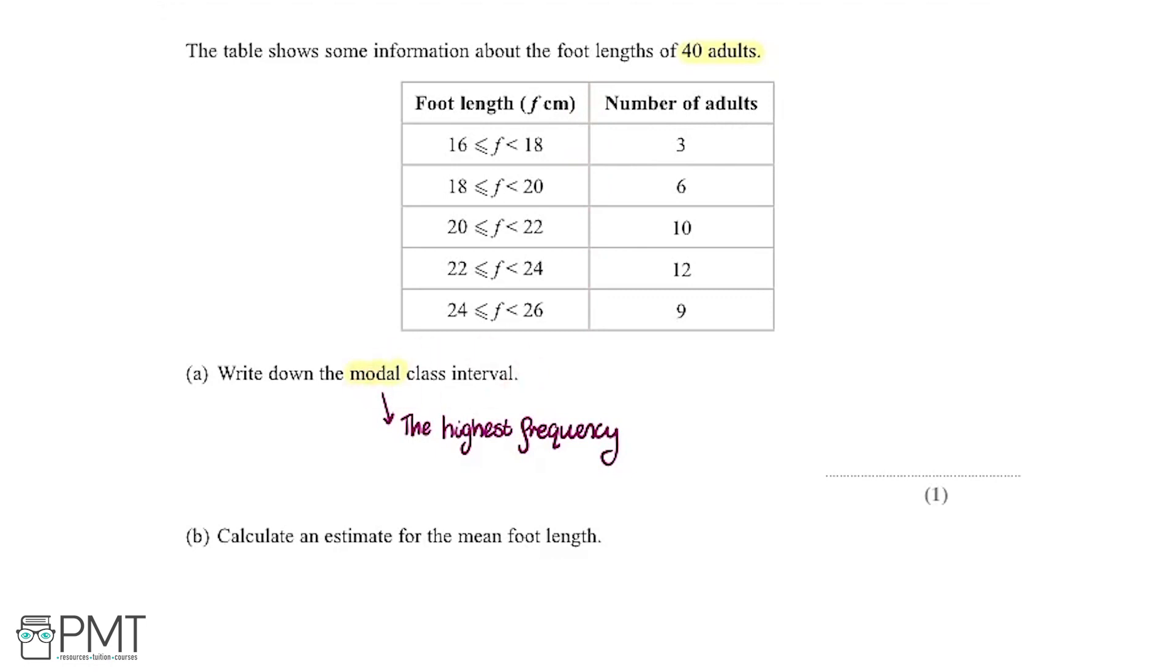Our modal class interval is going to be this one here, so the foot length being greater than or equal to 22 and less than 24. That's because it's got the highest frequency - we've got 12 here which we can see is the highest out of all of these. We need to write down the correct class interval here in order to get the one mark.